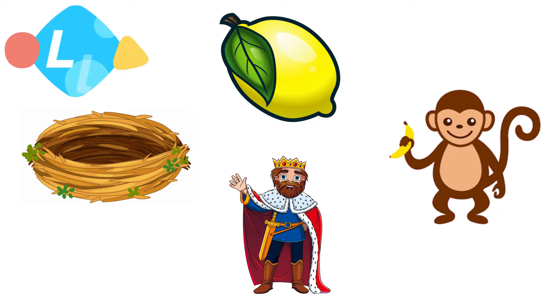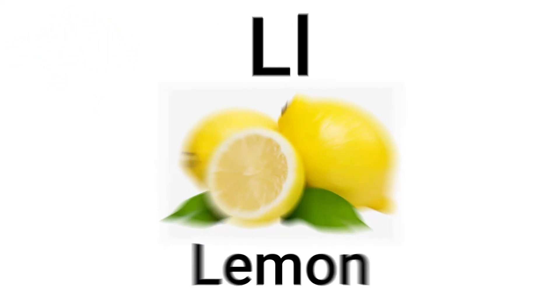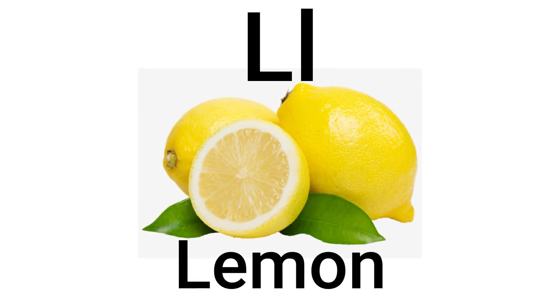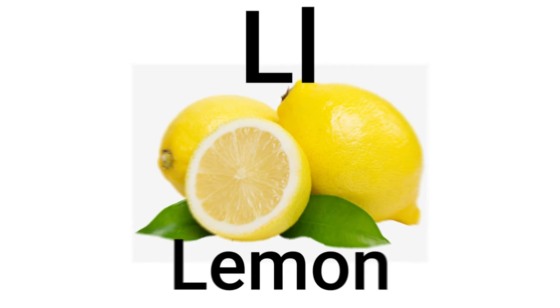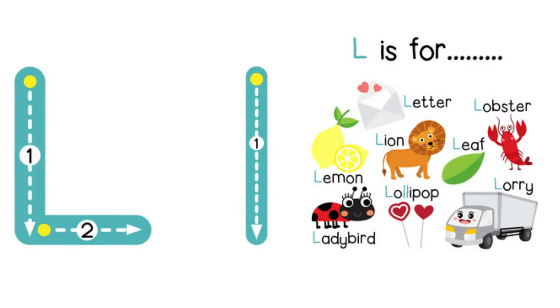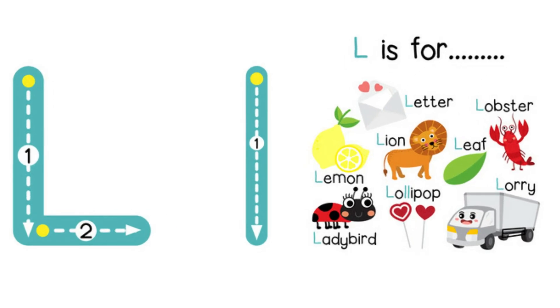Can you find something here that starts with the letter L, making the sound L? Did you point to the lemon? Fantastic! L is for lemon. Now let's have a go at tracing the big L and the small L with our pointer finger.